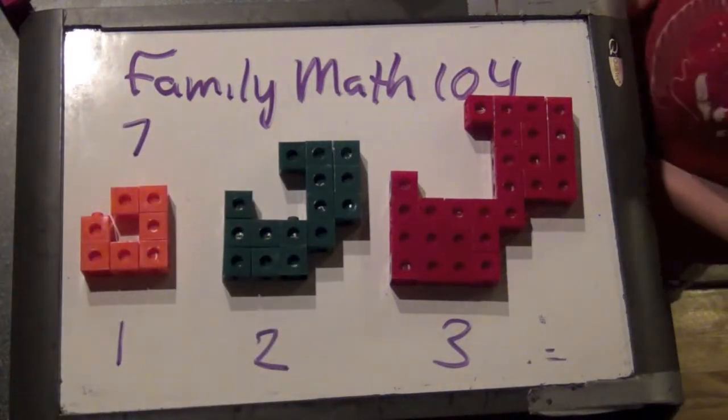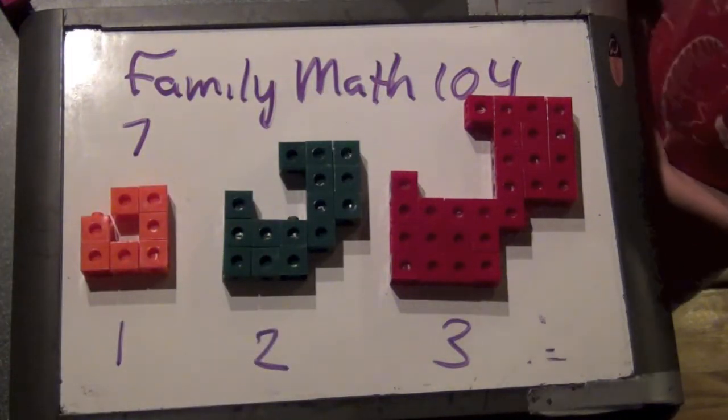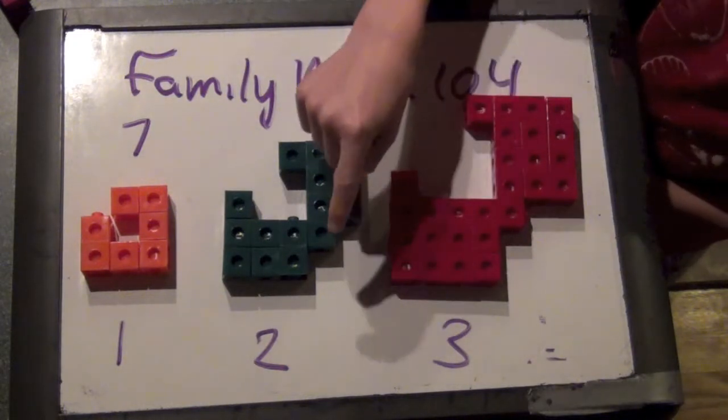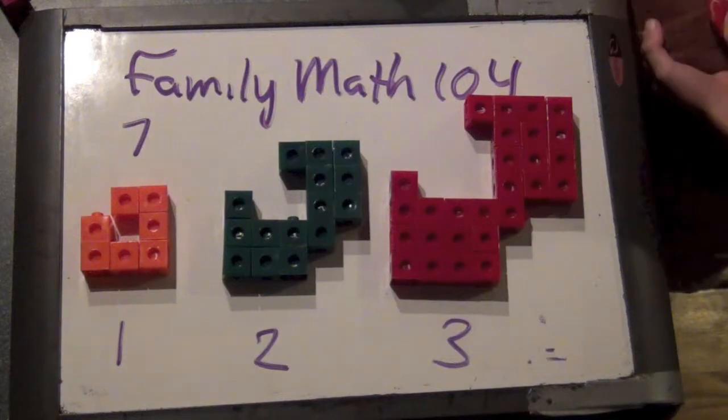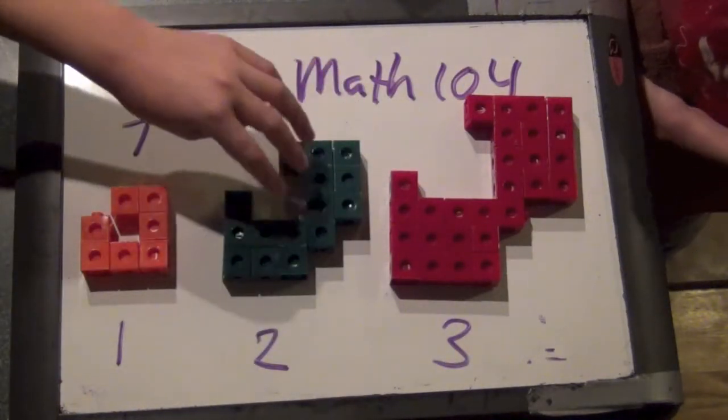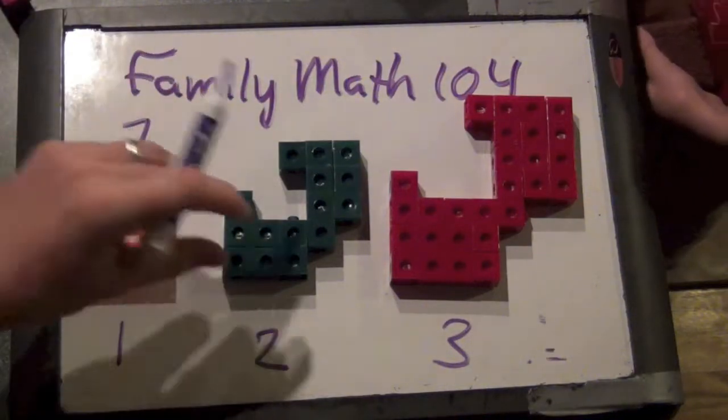How many snap cubes are in the green structure? Well, there's three, five, seven, eight, ten, two, four, fifteen. Okay. What do you count? Six. Twelve or fifteen. I see fifteen. Awesome.